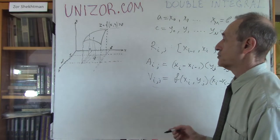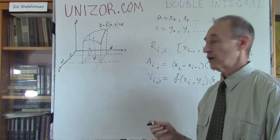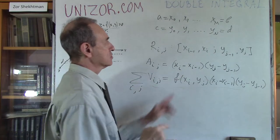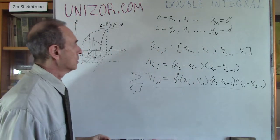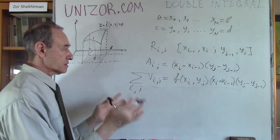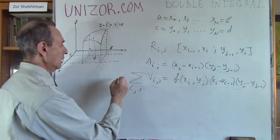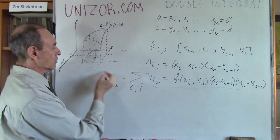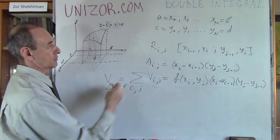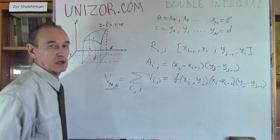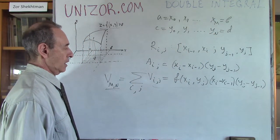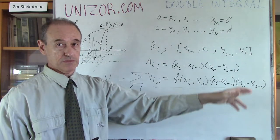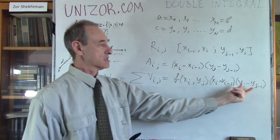To approximate the whole volume, I have to sum this over i and over j — with i changing from 1 to m and j changing from 1 to n. This is my approximate volume V_{m,n}: not the real volume, but an approximation based on m divisions along x and n divisions along the y-axis.